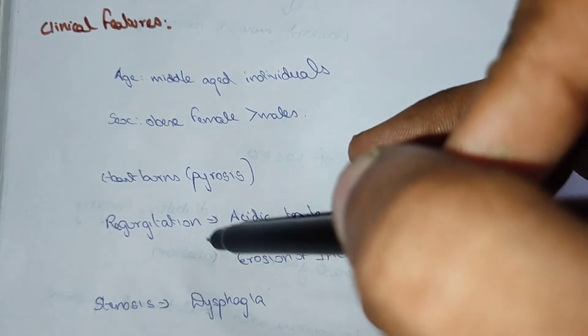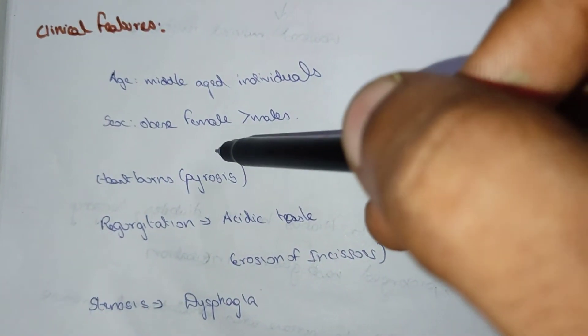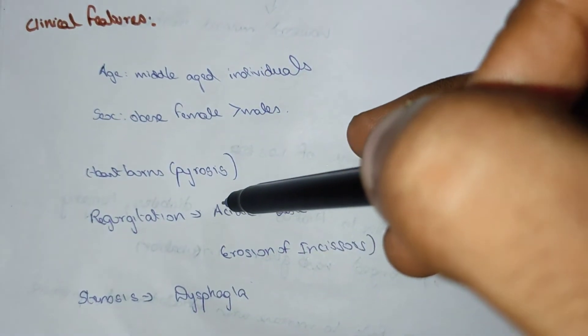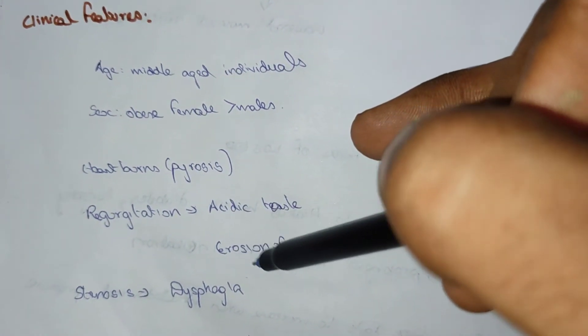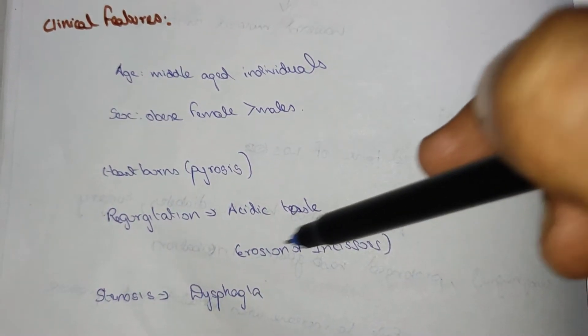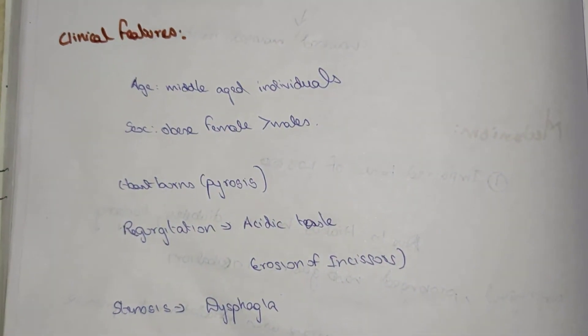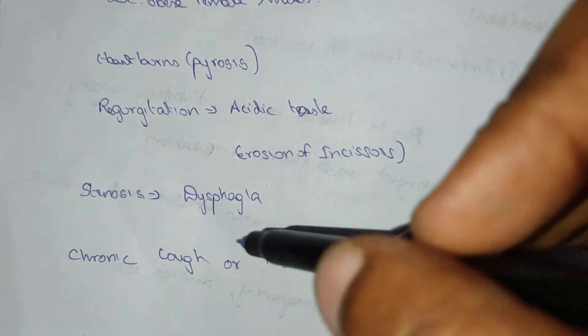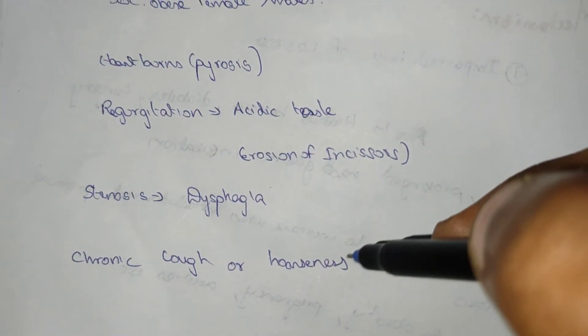The first and major sign is heartburn, which is also known as pyrosis, and regurgitation. There is acidic taste and erosion of the incisors due to the regurgitation. Stenosis, dysphagia, difficulty in swallowing, chronic cough, and hoarseness of voice. These are the signs and symptoms of GERD.